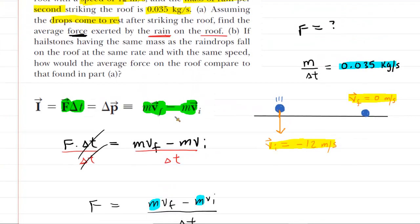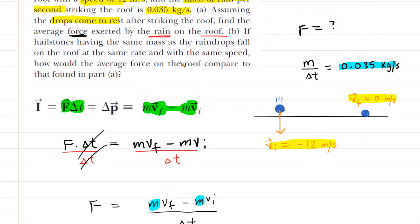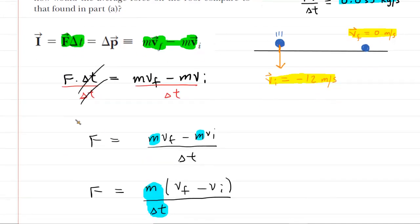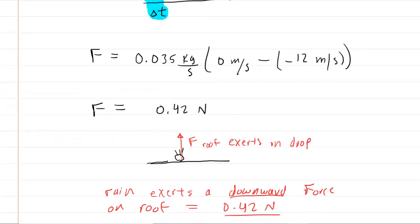We go over to part B, which asks us about hailstones. Now, this is a little unusual because what we're supposed to kind of figure out, and I'm not quite sure how we're supposed to figure this out, but we're supposed to infer, basically, that because they're hailstones, that when they hit the roof of the car, they're actually going to bounce upward.